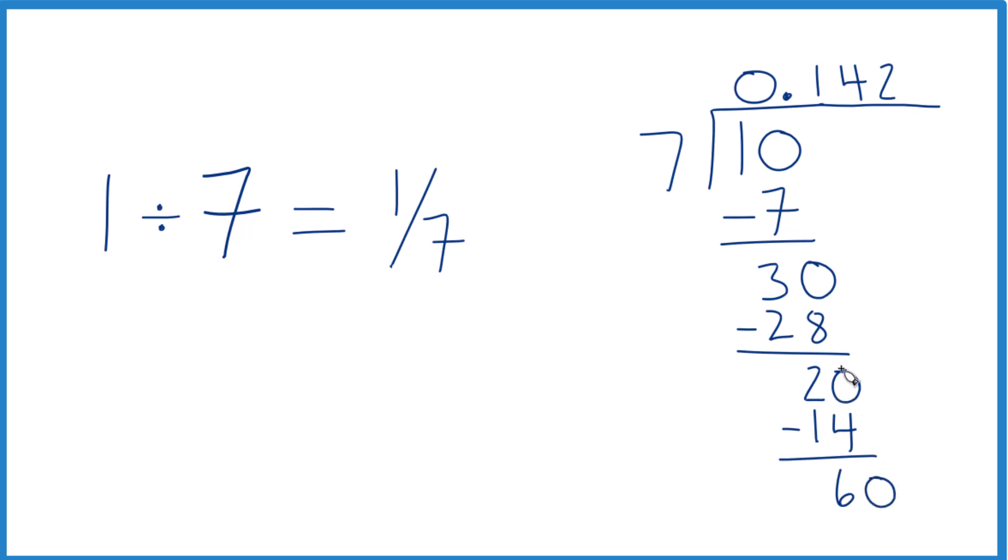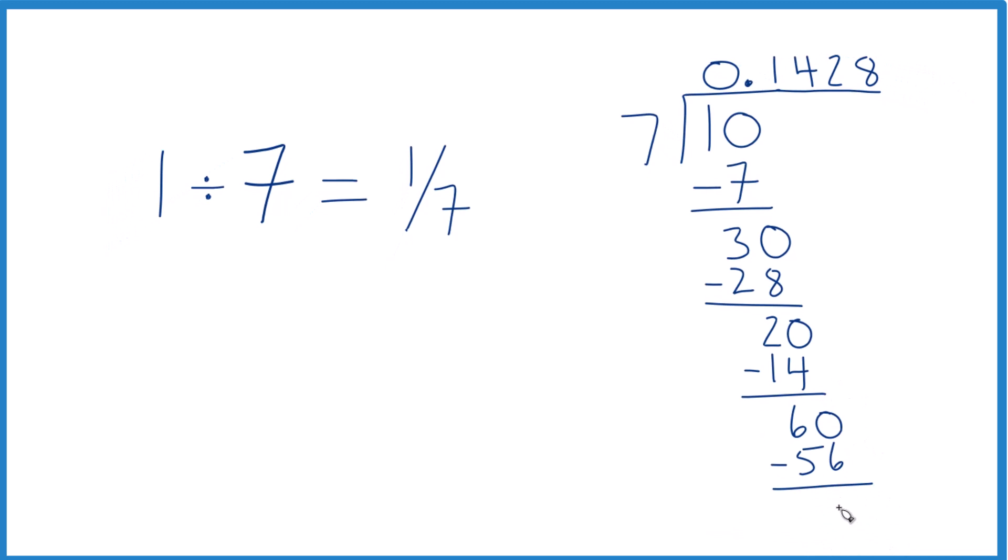7 times 9, that's 63. 7 times 8, that's 56. That works. We subtract and we get 4.